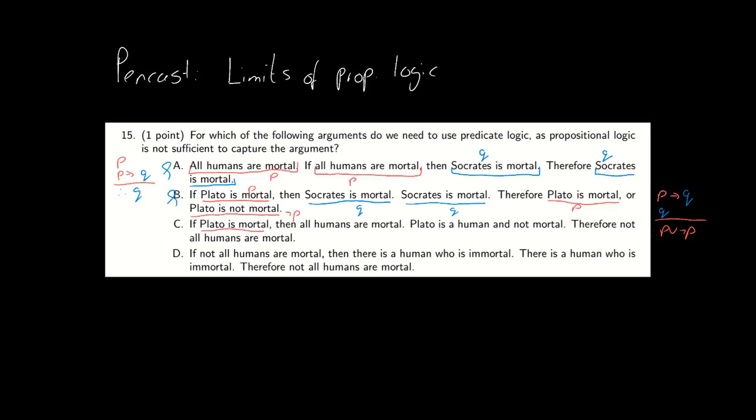What about the third one? If Plato is mortal, Plato is mortal. Okay now we've got the negative of that so p and not p, and then 'all humans are mortal' we've got that twice as well.